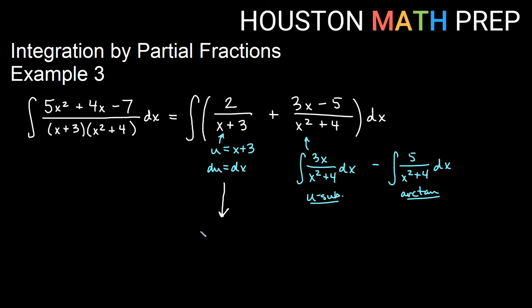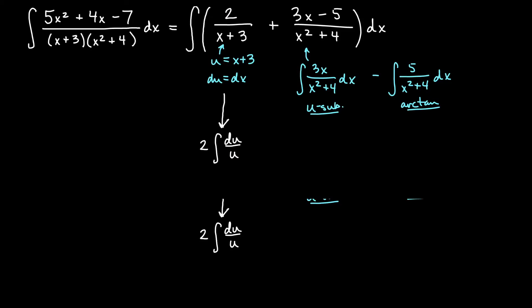So this first one, I could bump the two out if I want. I have 2 integral of du over u, and that for us is simply going to be 2 ln of u, and so that one is going to be 2 ln of u was x plus 3 in this one.